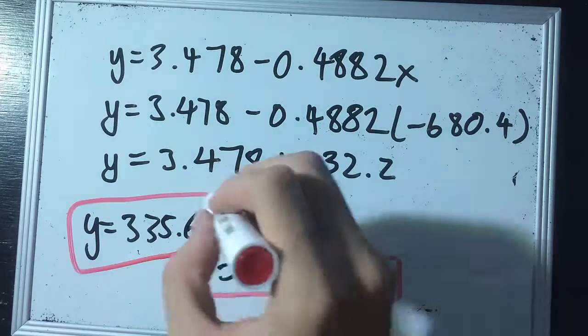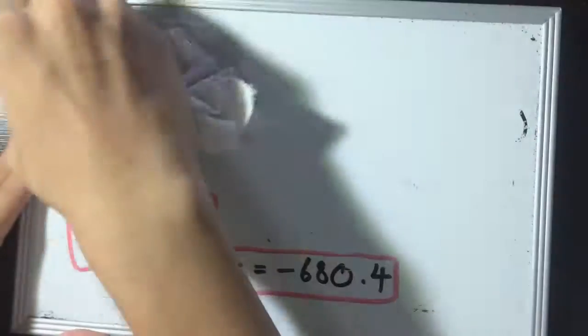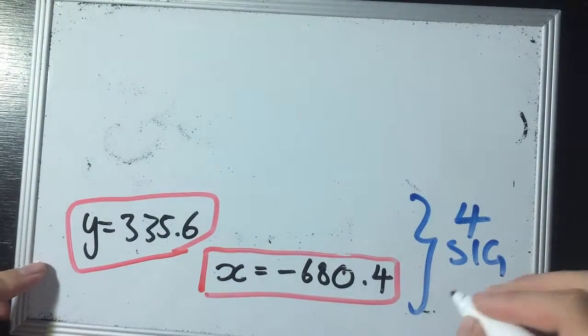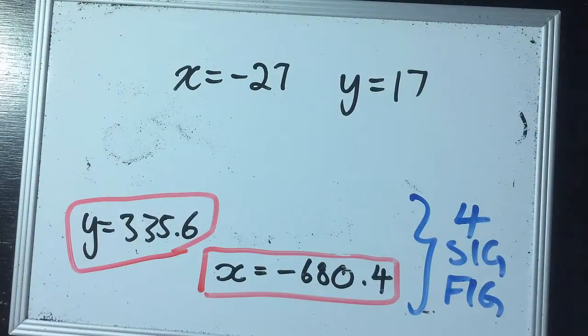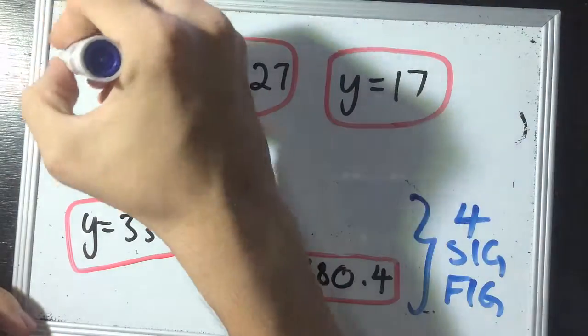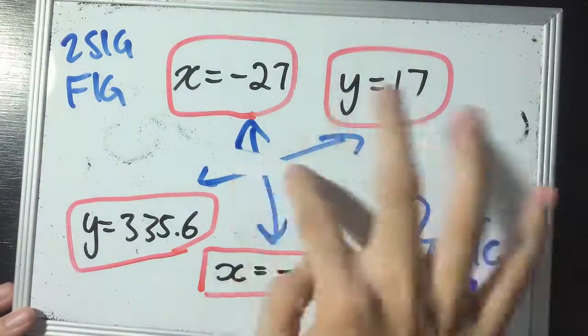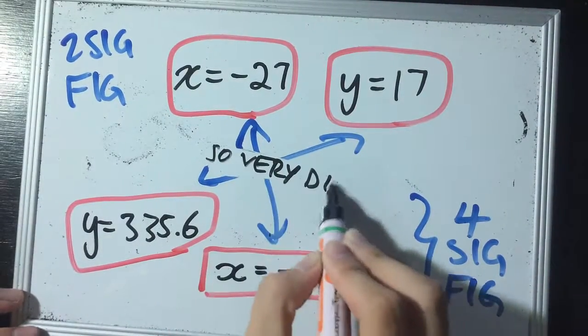If you take this answer for four significant figures, using four significant figures, and compare it to what we got when we're using only two significant figures, we can see that the answers are very different from each other. Very, very different from each other.